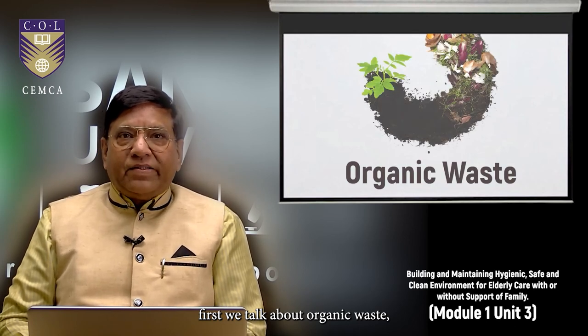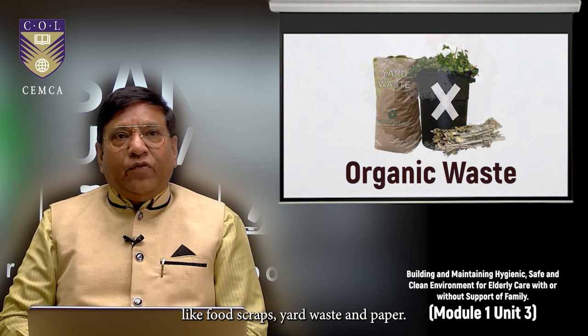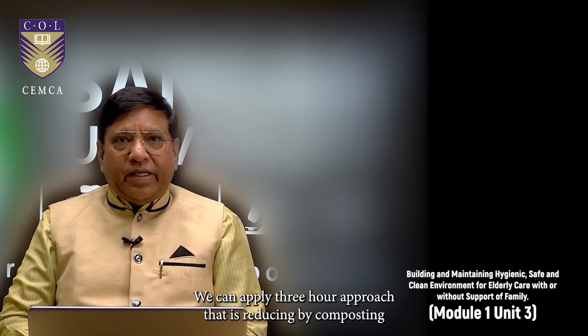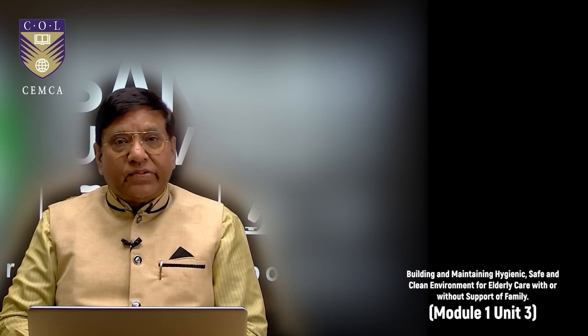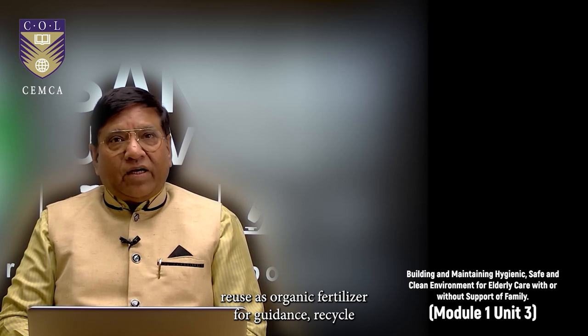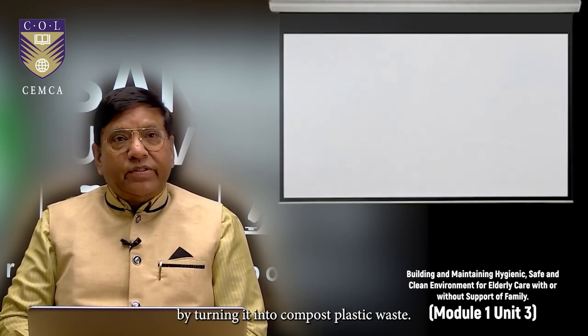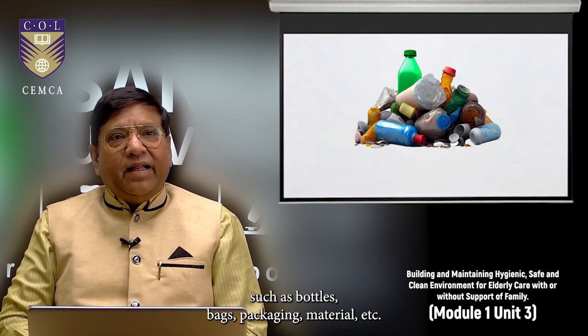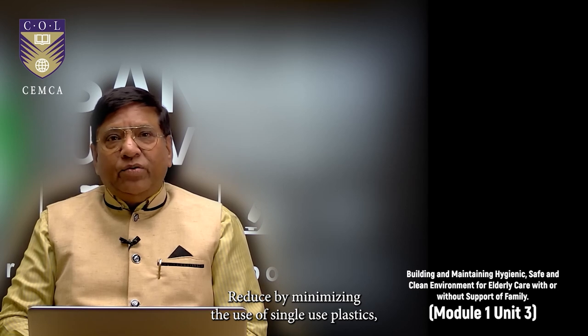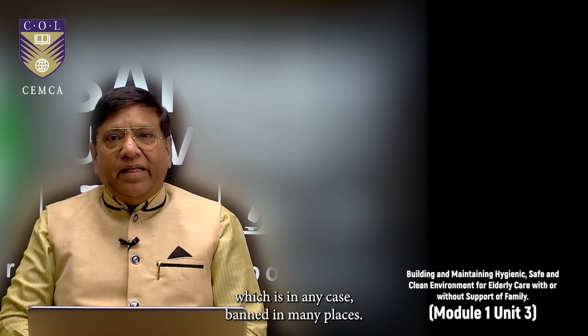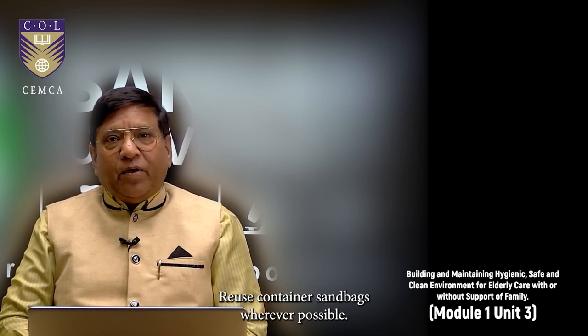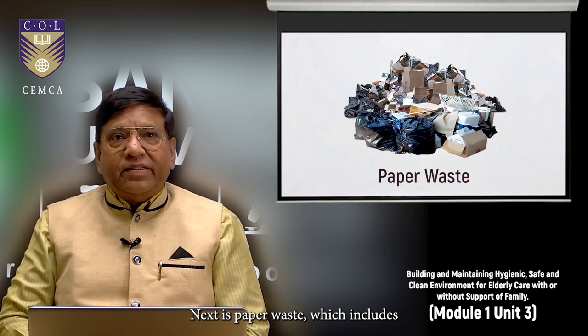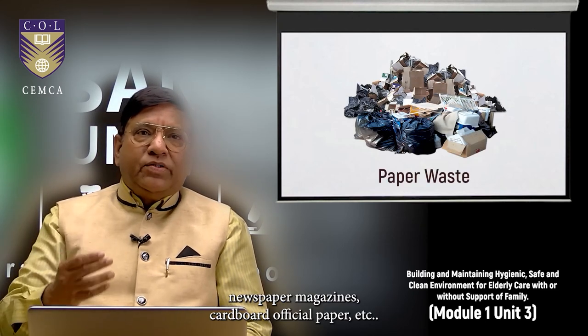First, we talk about organic waste which includes biodegradable materials like food scraps, yard waste and paper. We can apply 3R approach that is reducing by composting organic waste to create nutrient rich compost, reuse as organic fertilizer for gardens, recycle by turning it into compost. Plastic waste includes various types of plastic materials such as bottles, bags, packaging material. Reduce by minimizing the use of single use plastics which is in any case banned in many places. Reuse containers and bags wherever possible. Recycle by sending plastics to recycling centers. Next is paper waste which includes newspaper, magazines, cardboards, official paper. Reduce by going digital. Reuse both sides of the paper for taking notes and drafts. Recycle by sending paper waste to recycling facilities.